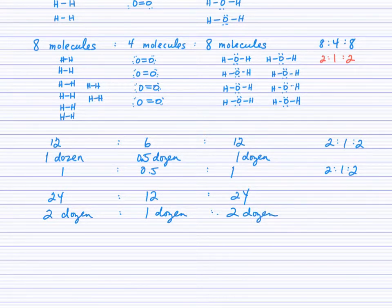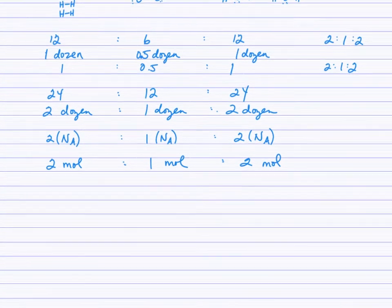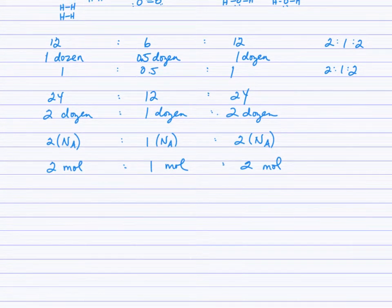Again, we see that 2:1:2 ratio. What if you had two times Avogadro's number of molecules of H₂ and one times Avogadro's number of molecules of O₂, forming two times Avogadro's number of molecules of water? Isn't that really just two moles to one mole to two moles?